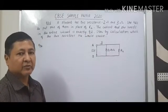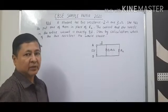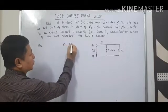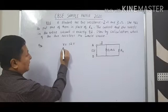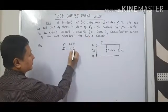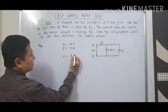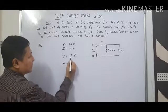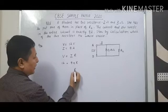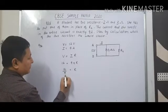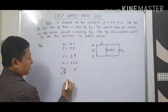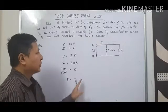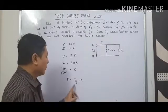First, we will find the total resistance of the circuit using V = IR. V is given as 12 volt, and I needed is 9 ampere. So 12 = 9 × R, which gives R = 12/9 = 4/3 ohm. So the total resistance of the circuit is 4/3 ohm.